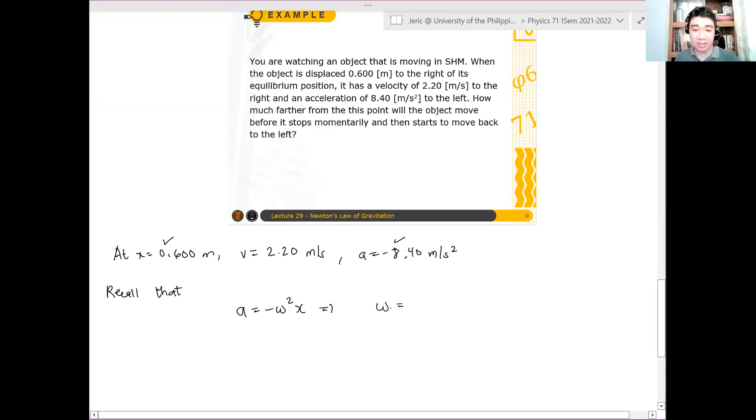Omega is just equal to the square root of negative a over x raised to one half, which is just equal to negative of minus 8.40 meters per second squared, all over 0.6 meters raised to one half.